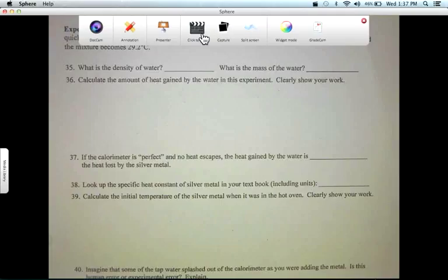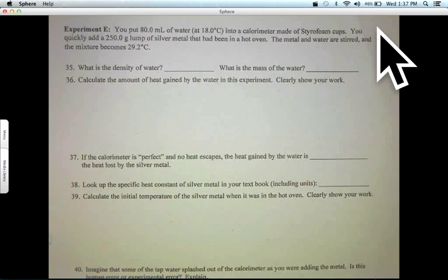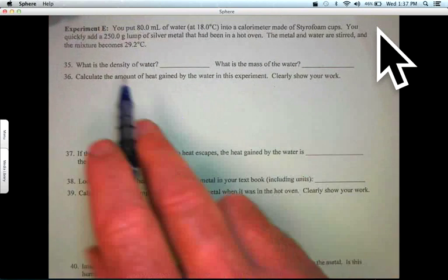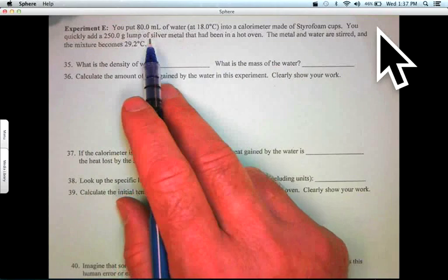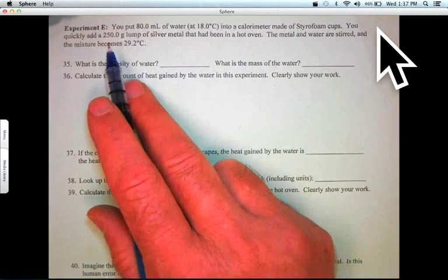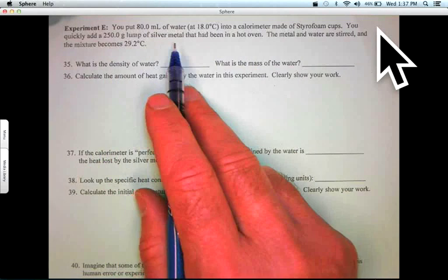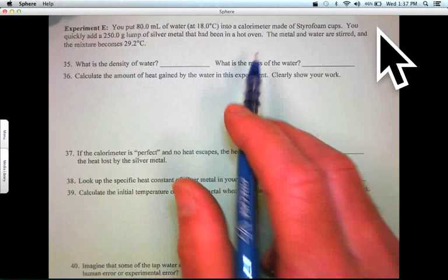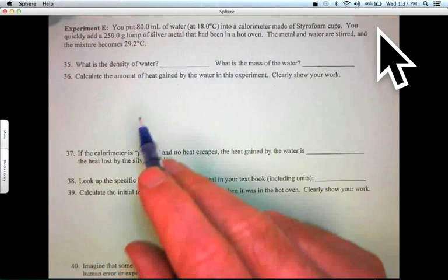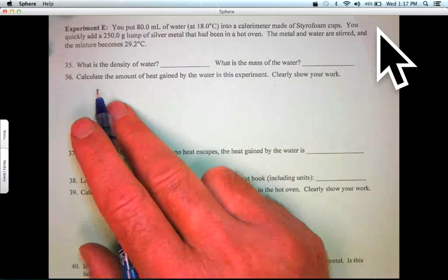Hello and welcome to Chemistry with Mr. Olson. We are going to solve a calorimetry problem. We have water in the calorimeter and we put in a hot lump of silver metal and we mix it and we get a final temperature. Let's answer some questions.